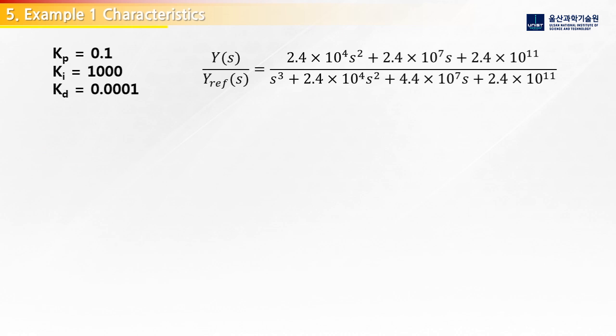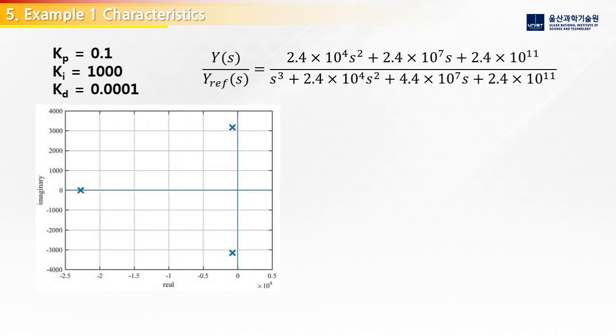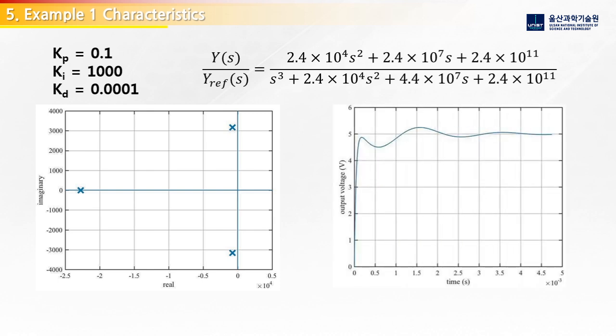When we plot the poles of our closed loop system, we get this plot in the S-plane. We have one pole on the real axis and two complementary poles with imaginary components. Since all the poles are in the left half plane, we know the system is stable.